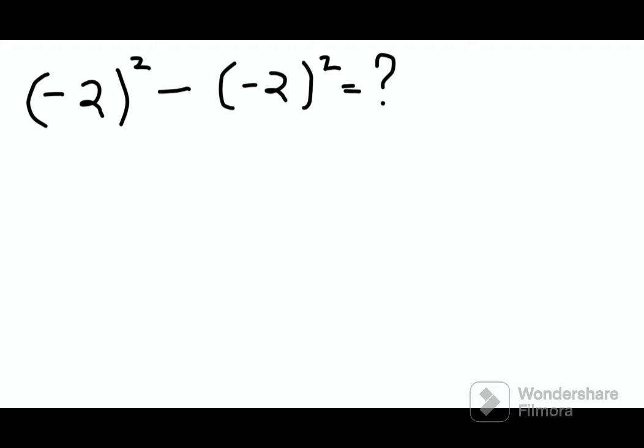Welcome everyone. Today we are going to solve a very nice question which still tricks a lot of people. We have (-2)² - (-2)² = ? Please understand, whenever you have a negative number raised to the power of 2, it actually becomes positive squared.